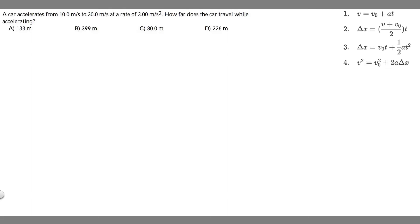In this problem, we're told a car accelerates from 10 meters per second to 30 meters per second at a rate of 3 meters per second squared. How far does the car travel while accelerating? And we're given a bunch of distances. So how do we solve this problem?